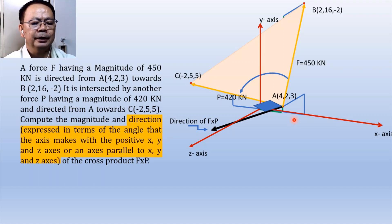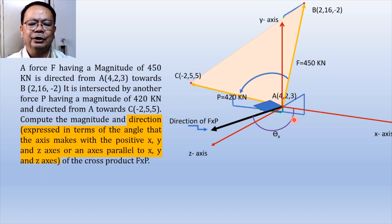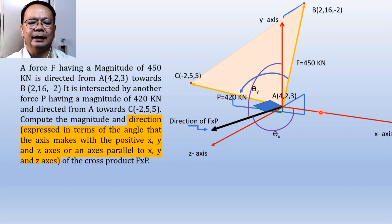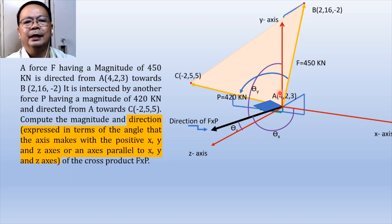The direction of the cross product is expressed in terms of the angle that this axis makes with the positive x, y, and z axis. If we move the x, y, and z axes towards the initial point of intersection, theta sub x is the angle that the direction of the cross product makes with an axis parallel to the x axis, theta sub y is the angle it makes with an axis parallel to the y axis, and theta sub z is the angle it makes with an axis parallel to the z axis.